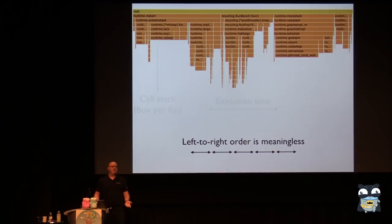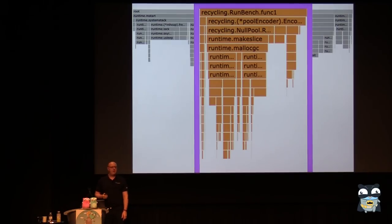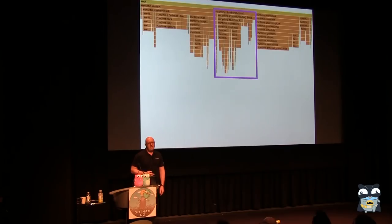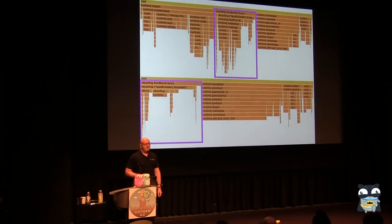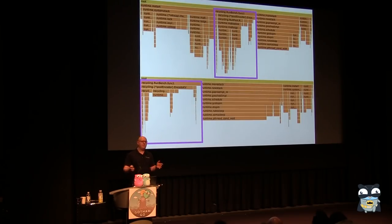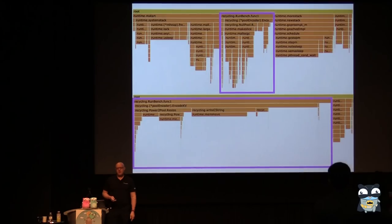The left-to-right order is completely meaningless — it's just an artifact of how the statistics were summarized. The execution time I want to highlight is this piece, a function called RunBench — the code I actually wrote that I called in the main function after turning on the profiler. Everything else outside that box is something the runtime is doing for us, in this case garbage collection. Here is another flame graph of the exact same work but with a different memory management strategy — notice the width of the box got a little bit bigger.